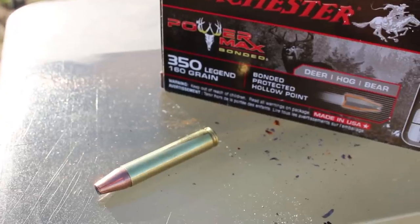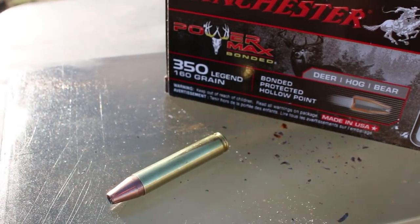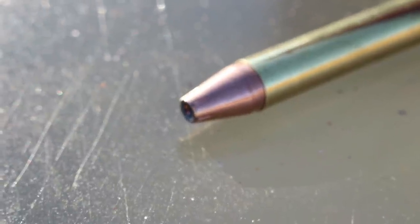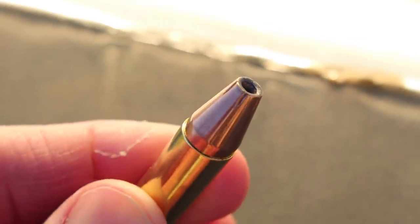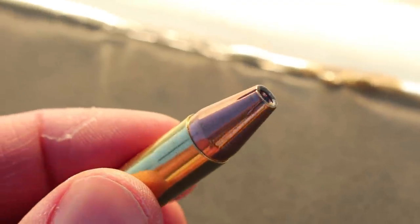The one we're testing today is a 160 grain Power Max Bonded hollow point and we're going to see if this works like that 145 or that 180. It looks like it'll cut through the air pretty well - it does have a really long nose. Let's get out there and see what this can do at 100 and 200 yards.